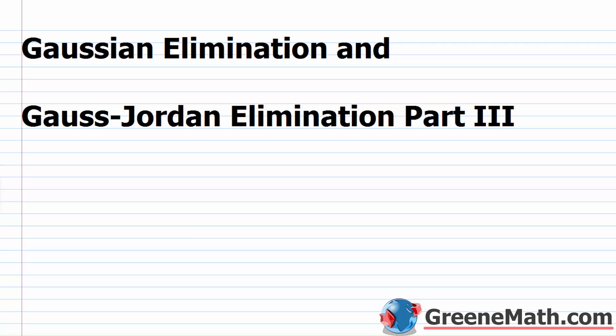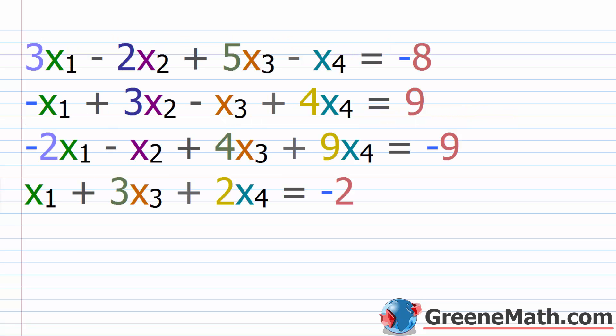In this lesson, we want to finish talking about Gaussian elimination and also the Gauss-Jordan elimination. Over the course of the last two lessons, we learned about both methods and saw that we could use them to solve a linear system. We looked at two variables and then three variables, and now we're going to take the next step and look at a linear system with four variables.